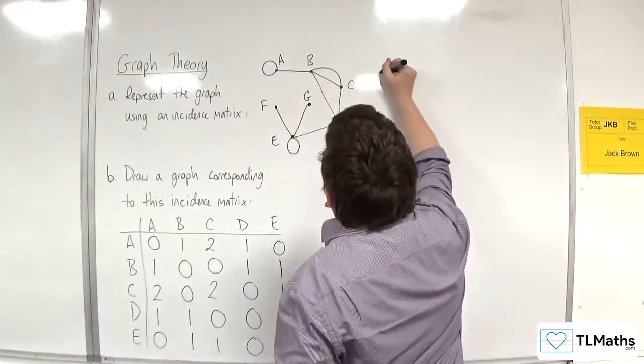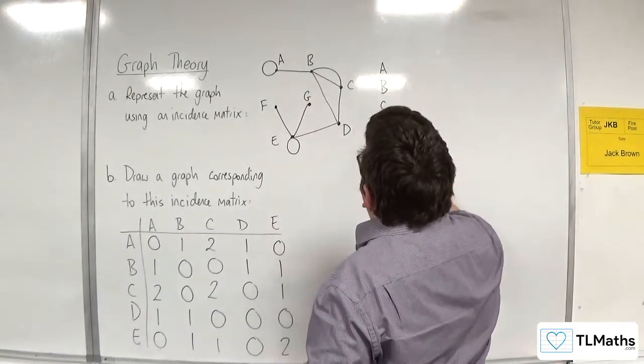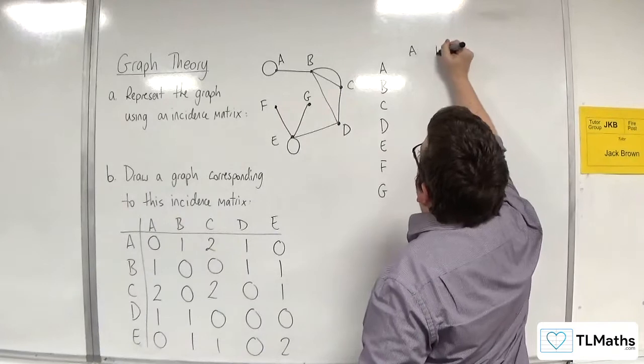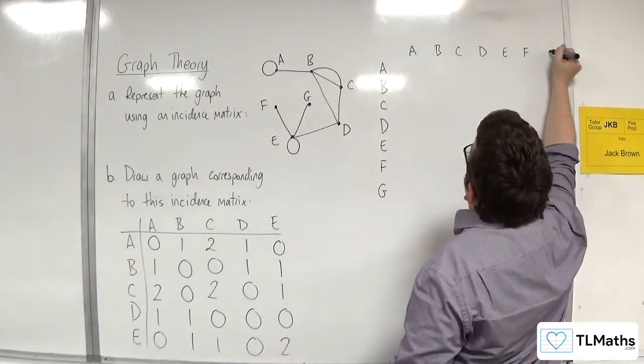So what we need is A, B, C, D, E, F, G across the top and A, B, C, D, E, F, G down the side.